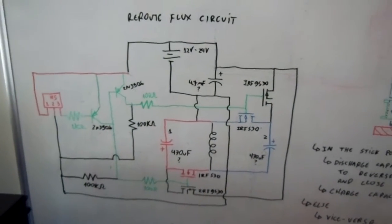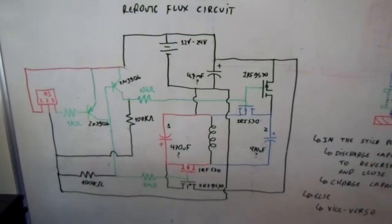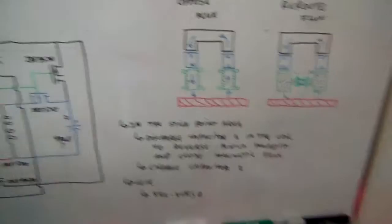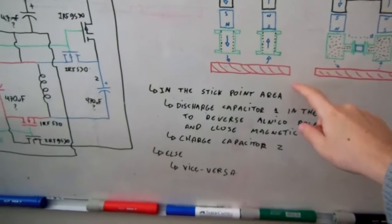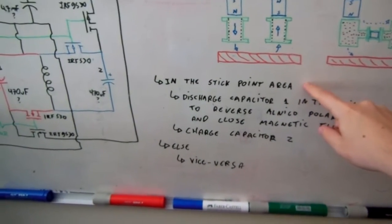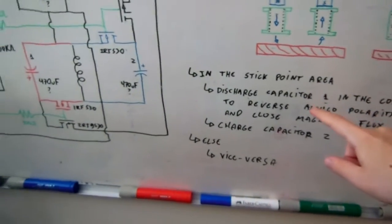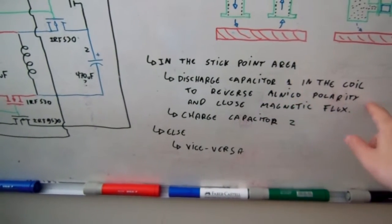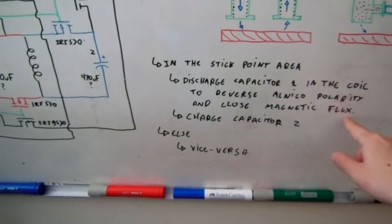I don't know if this one is correct, I need to test it, but the logic is quite simple. So in this stick point area, I'm gonna discharge capacitor one in the coil to reverse Alnico polarity and close the magnetic flux.